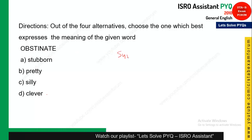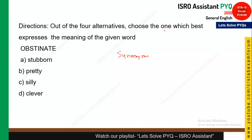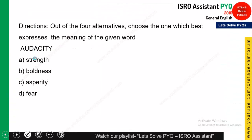The next word is 'obstinate' and you need to find its synonym — the word that best expresses the meaning of the given word. This is a very common word. The meaning of obstinate is stubborn. If you are stubborn about a particular thing, you are obstinate about it. So option A is the correct answer.